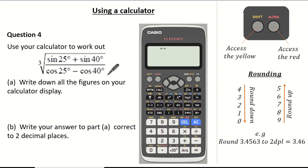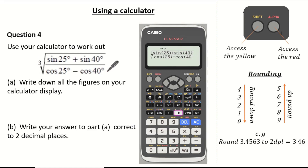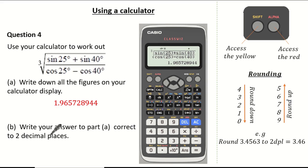So now we have our calculator set in degrees, let's insert our calculation. First access the cube root by pressing shift and square root. Then our fraction button and we can insert our top calculation: sin 25 — you will notice it opens brackets so we need to close it — add sin 40, open brackets and close it. This means sin 25 degrees add sin 40 degrees. Scrolling down we access cos 25 degrees, close brackets, subtract cos 40 degrees, close brackets. Now you will notice it looks slightly different to what was given in the exam, but that's because we are using trigonometry. Writing all the figures on our calculator display we have 1.965728944.